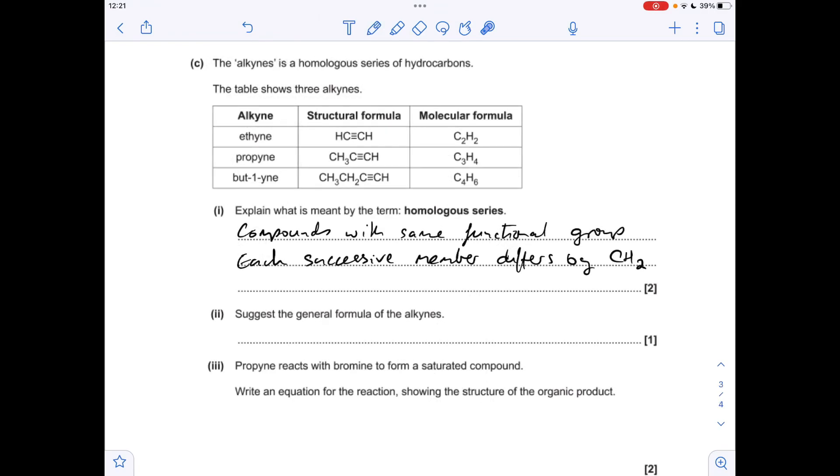Moving on to the next question about the alkynes. So what's meant by the term homologous series? Just a memory test of definitions I'm afraid. Compounds with the same functional group, each successive member differs by CH2.